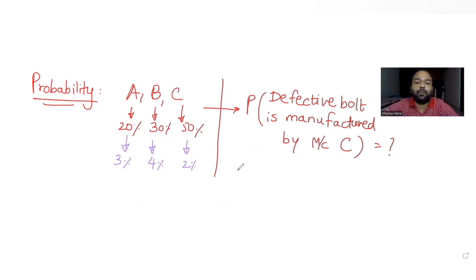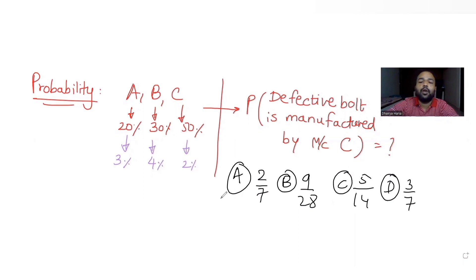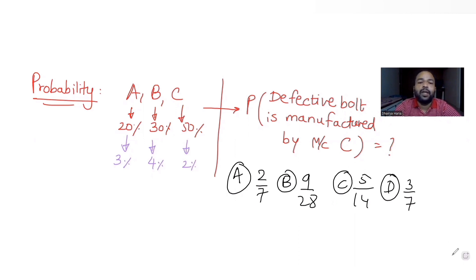There are four options given to us. Option A is 2/7, option B is 9/28, option C is 5/14, and option D is 3/7. We need to figure out which of these four options is the correct answer for the probability asked.